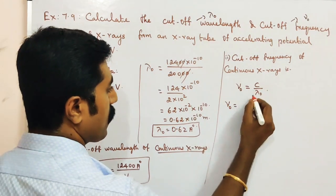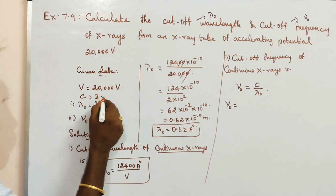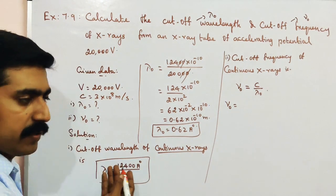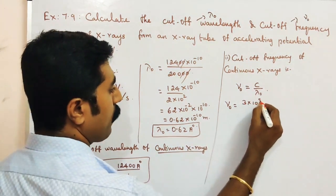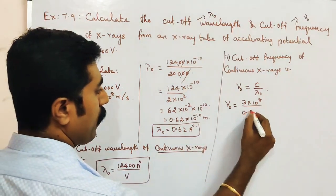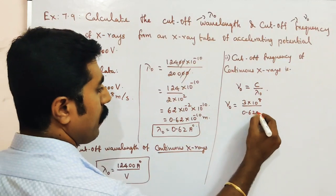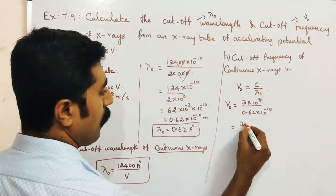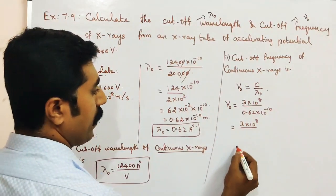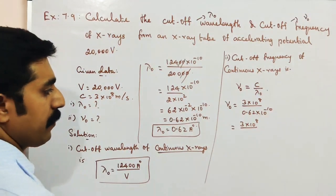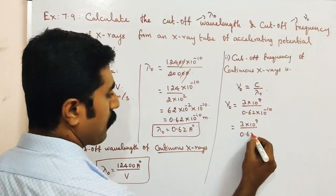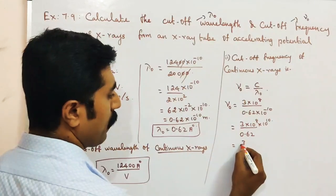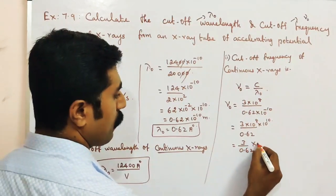From this we can write ν₀ = c / λ₀. The speed of light c = 3 × 10⁸ m/s. Substituting λ₀ = 0.62 × 10⁻¹⁰ m: ν₀ = (3 × 10⁸) / (0.62 × 10⁻¹⁰). The 10⁻¹⁰ in the denominator becomes 10⁺¹⁰ in the numerator, giving 3 / 0.62 × 10¹⁸.